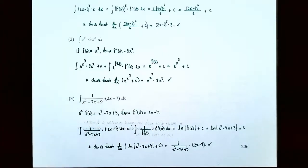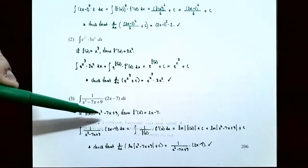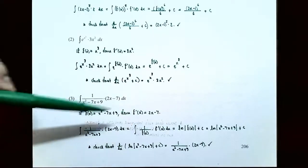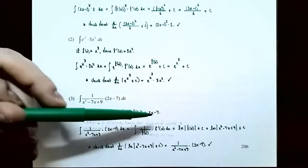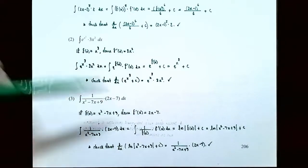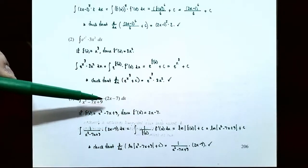Let's check: is f prime of x actually occurring in the integrand? If f of x is x squared minus 7x plus 9, take the derivative: f prime of x equals — the derivative of x squared is 2x, the derivative of negative 7x is negative 7, and the derivative of 9 is 0 — so f prime of x is 2x minus 7, and that occurs in the integrand for this integral.